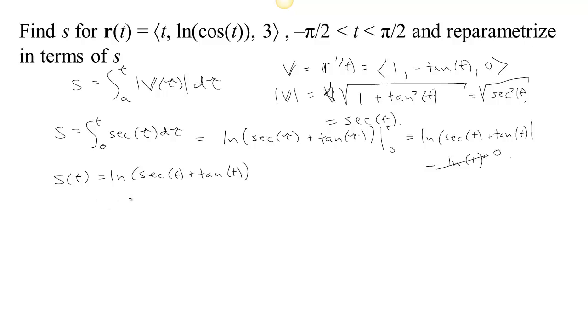So we know that s is an increasing function, so the distance traveled should increase as a function of time, right? The longer it's been, the further you will have gone. So we know that we can solve this function for t. So we've calculated the arc length parameter. Our next task here is to reparametrize our curve in terms of s instead of t.